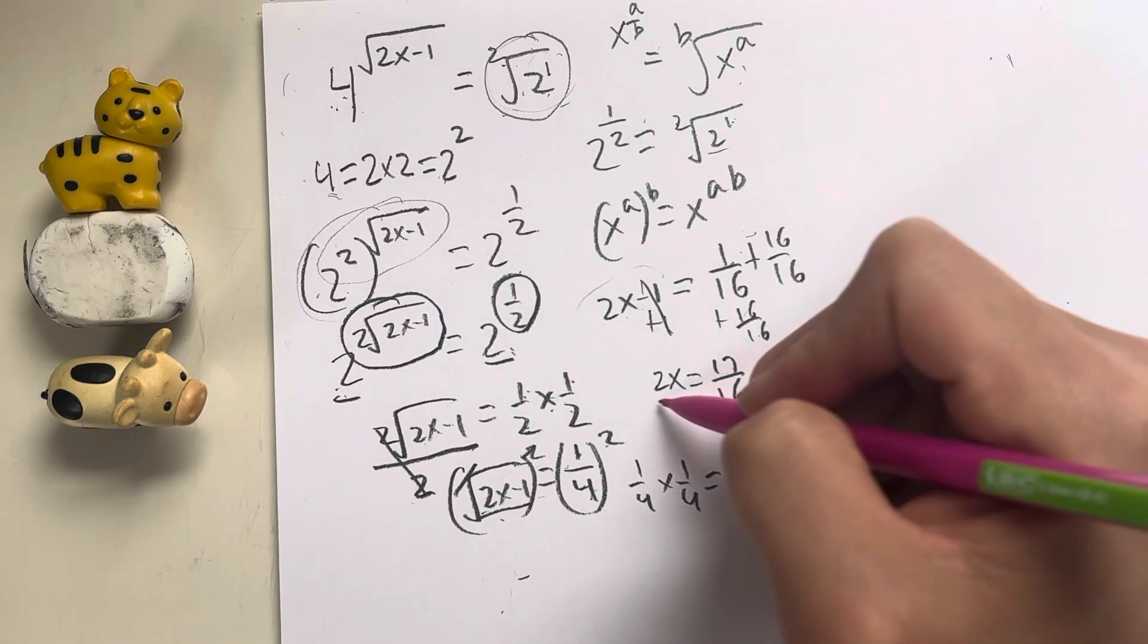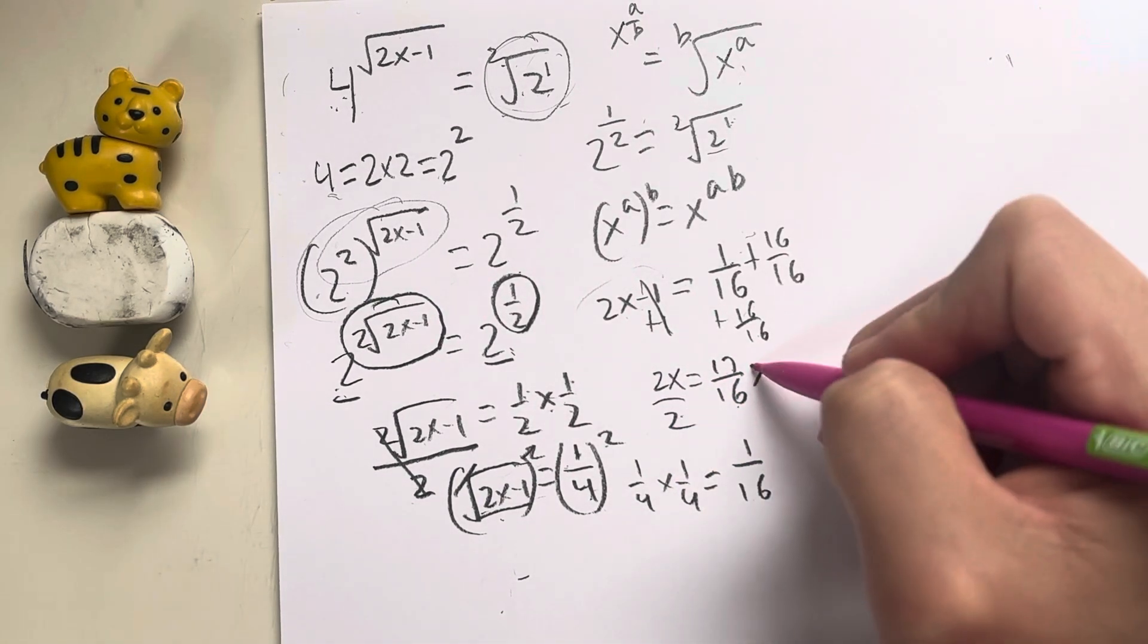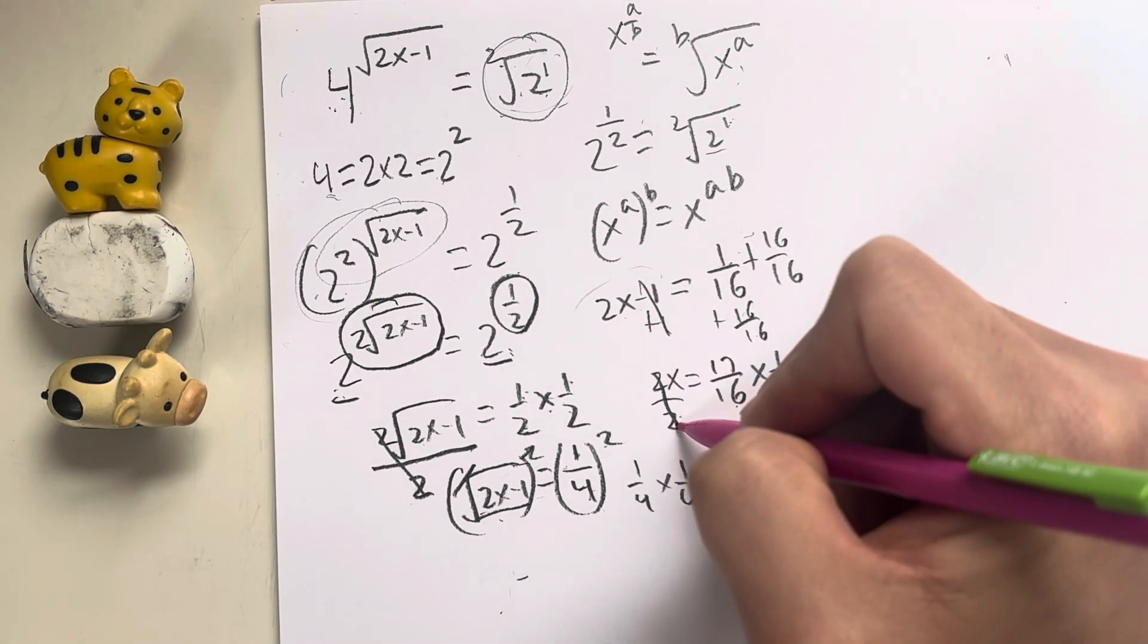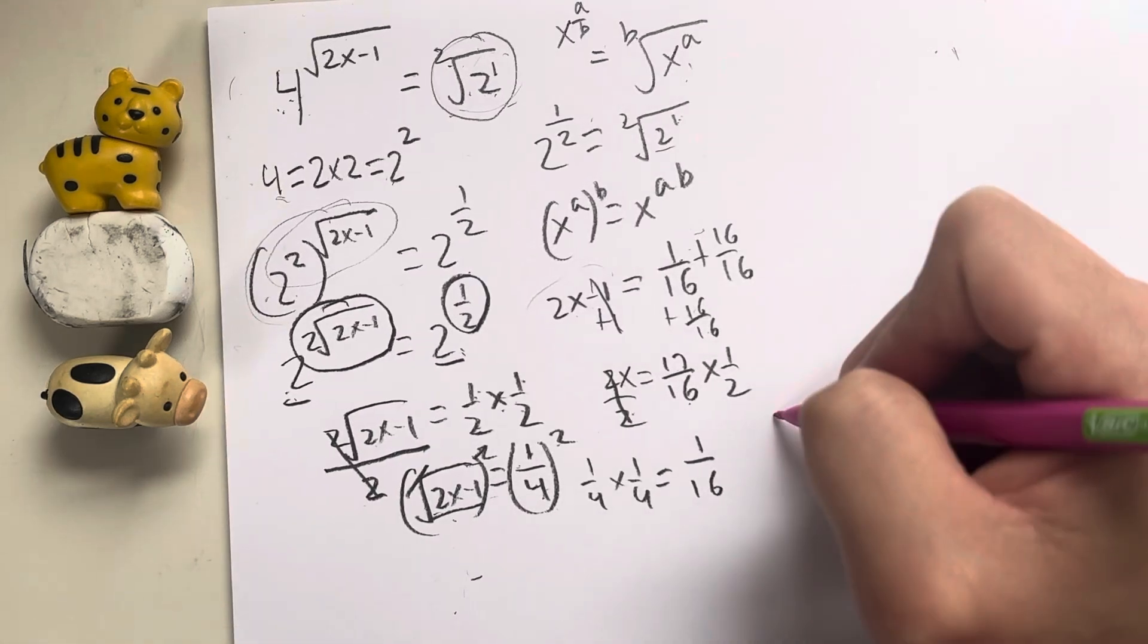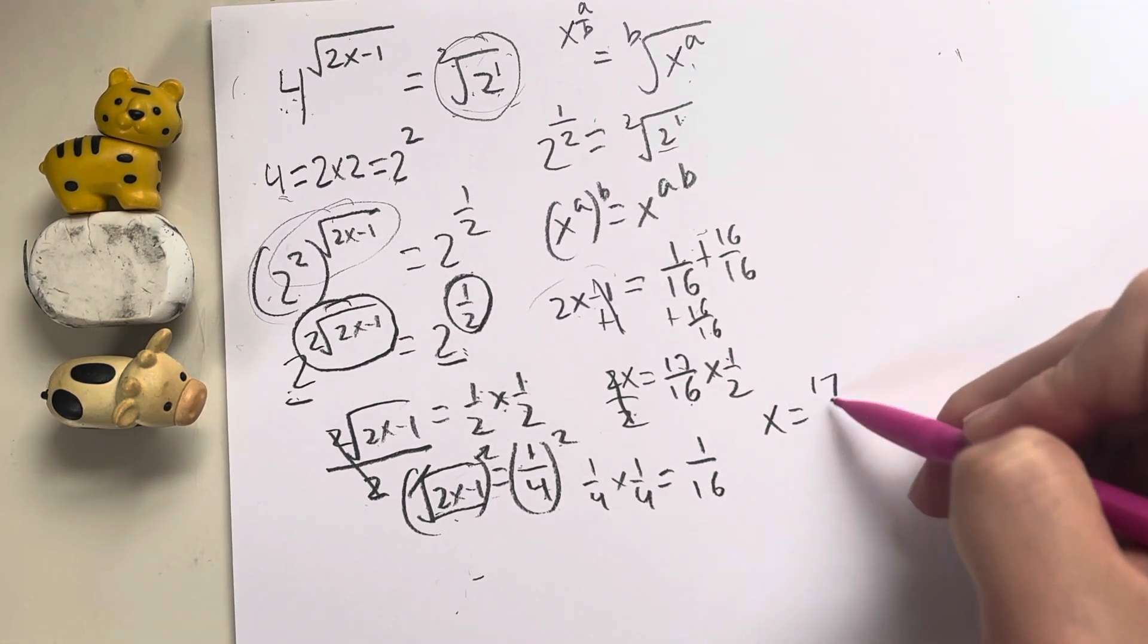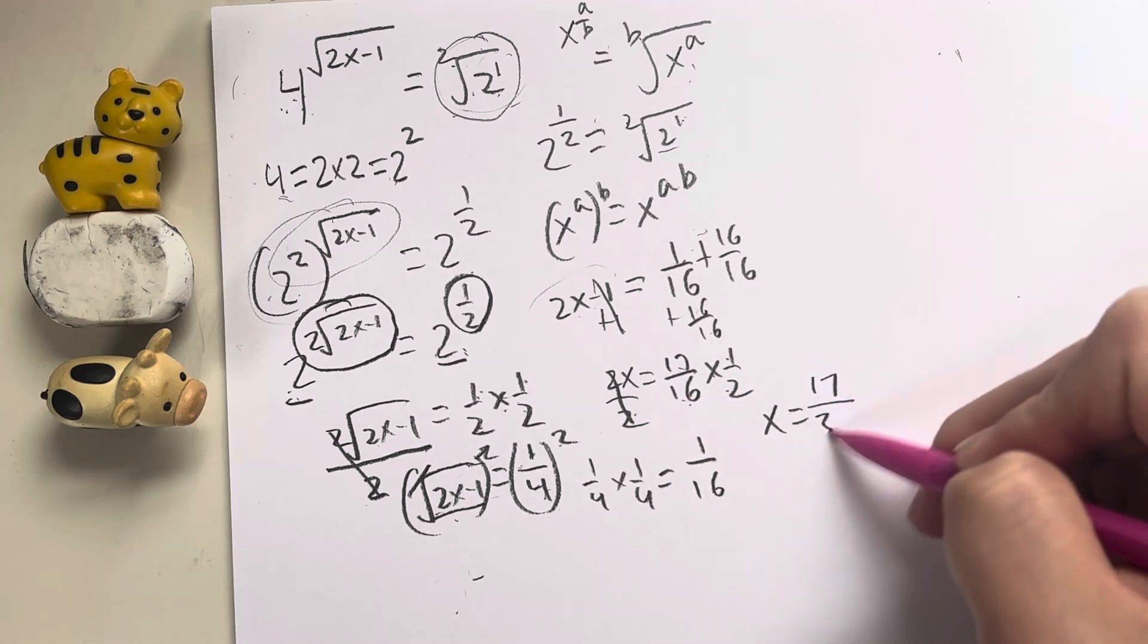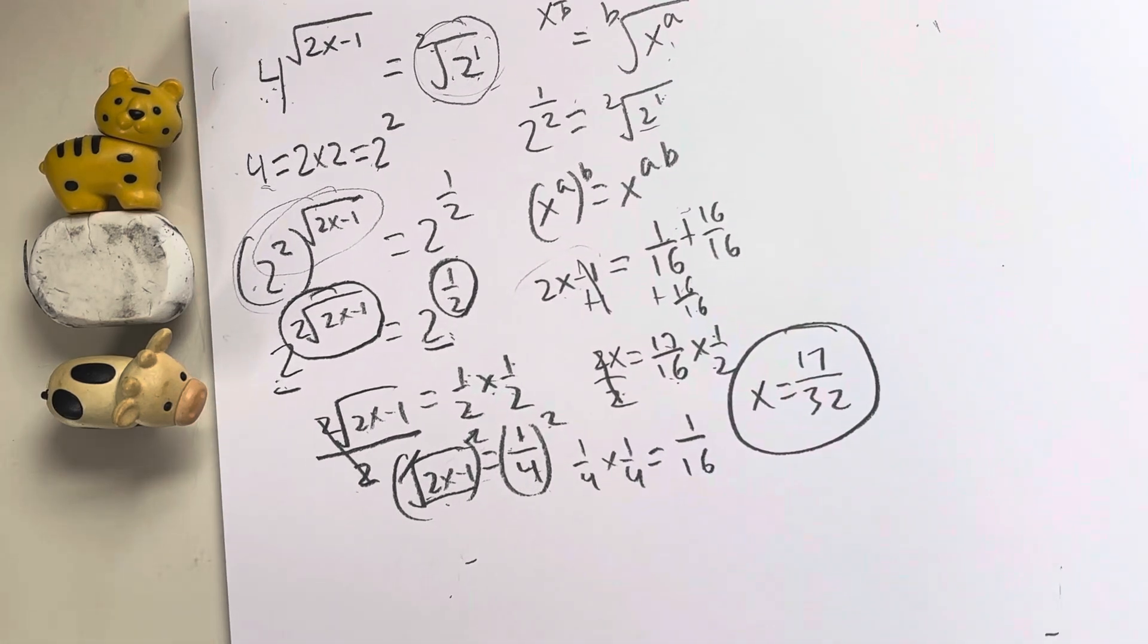Now, finally, I can divide by 2 one more time. Remember, same thing as multiplying by 1 half. 2 over 2 cancel out. Finally, leaving me with x is equal to 17 times 1, which is 17, over 16 times 2, which is 32. And that right there is your final answer.